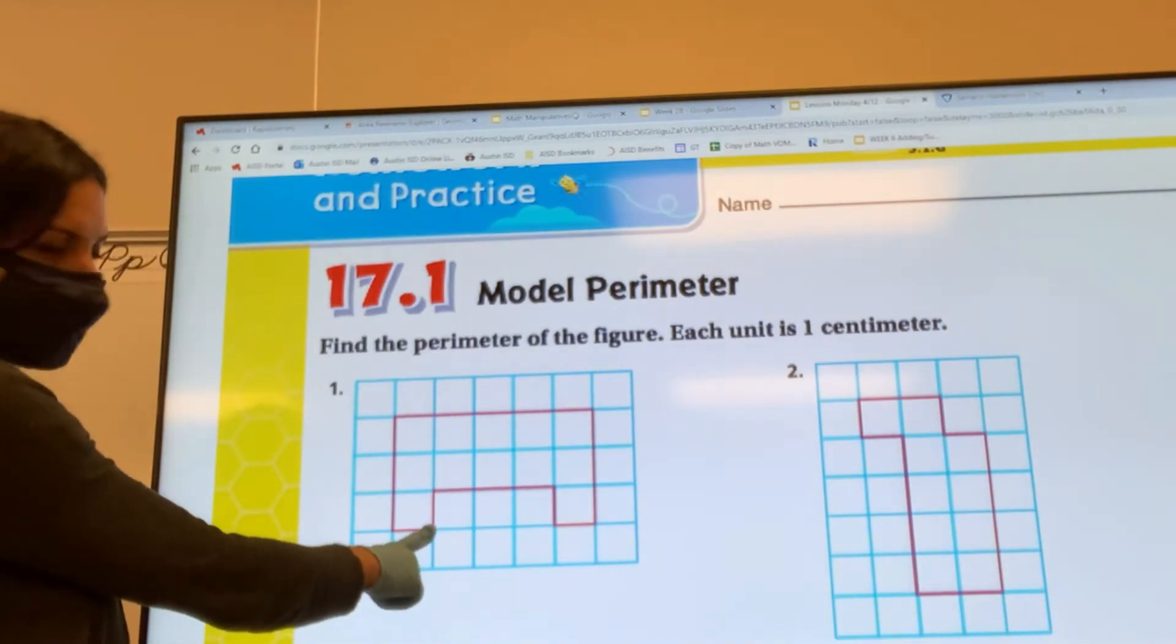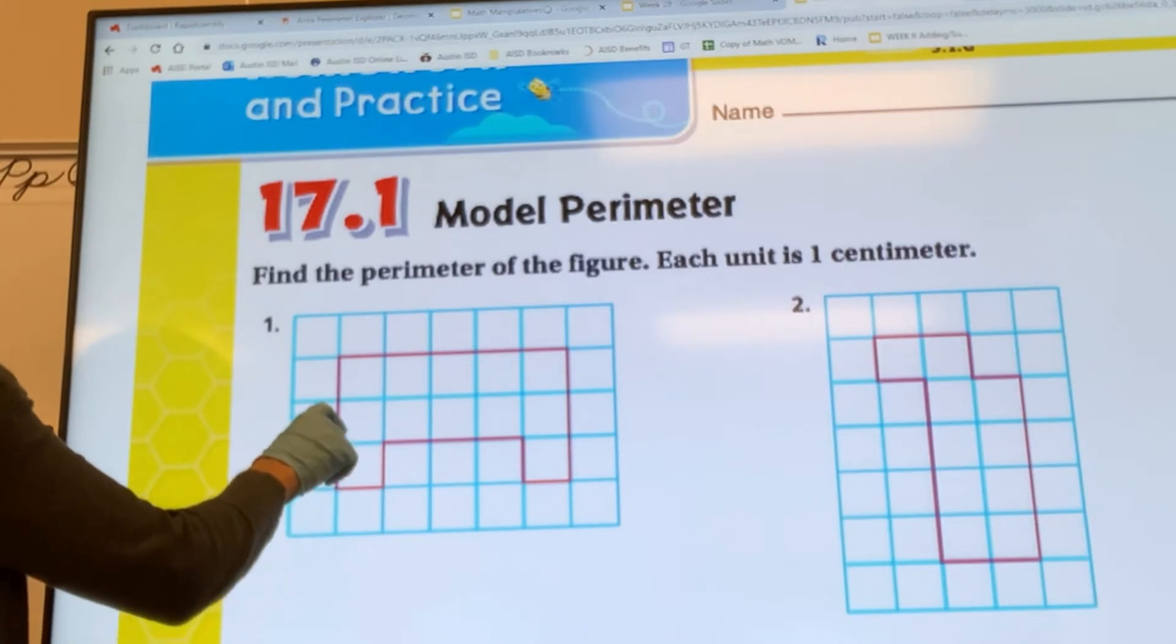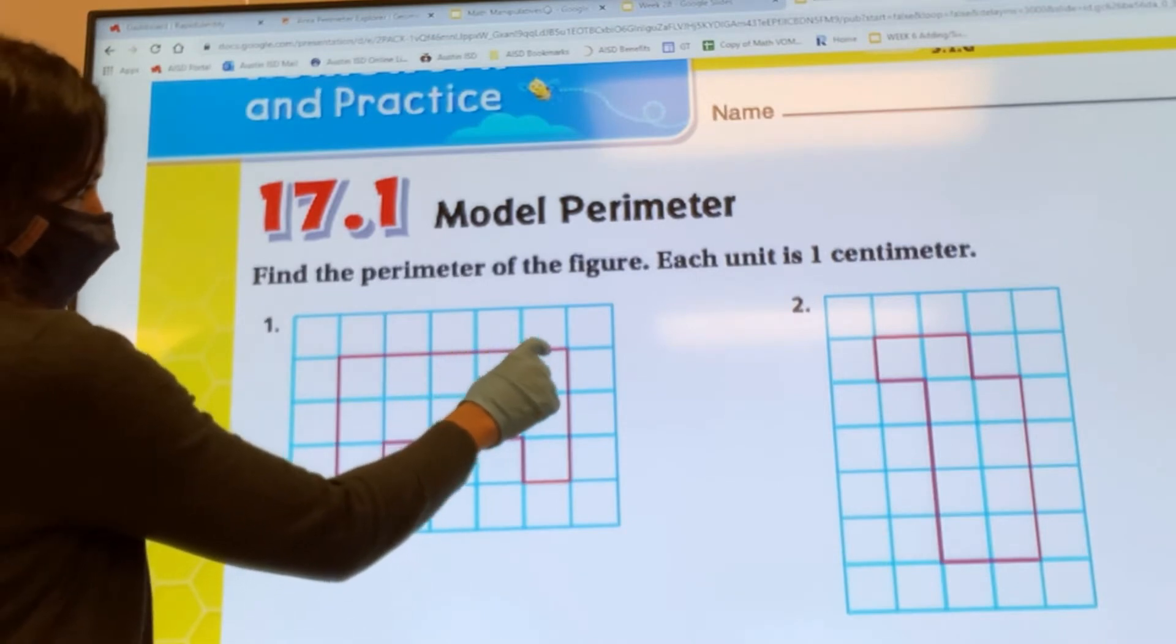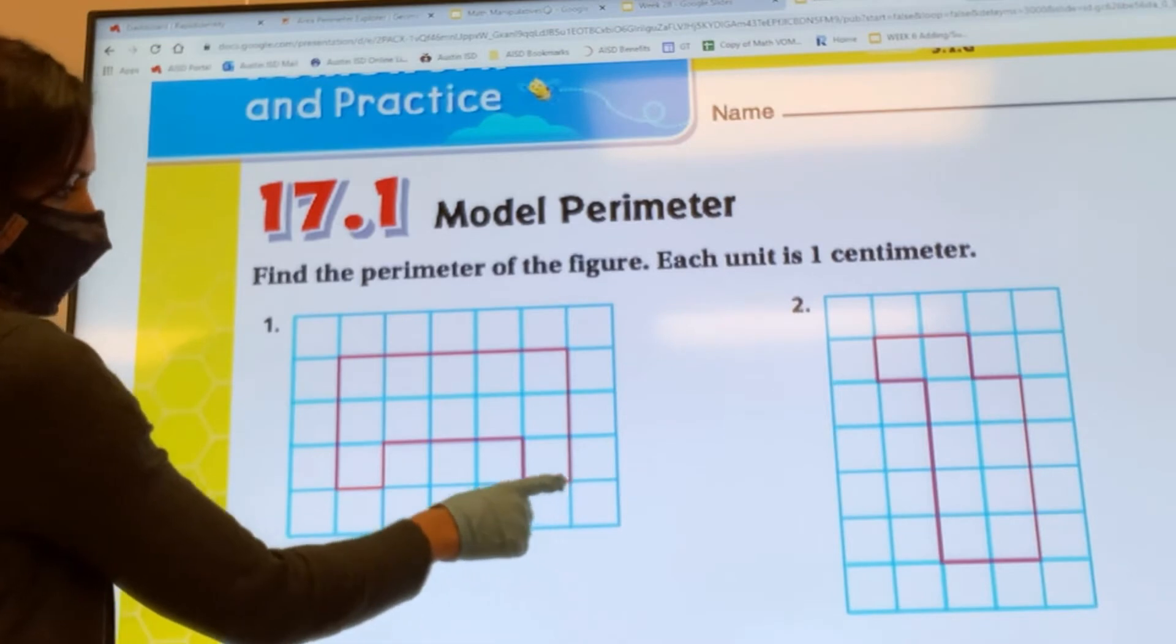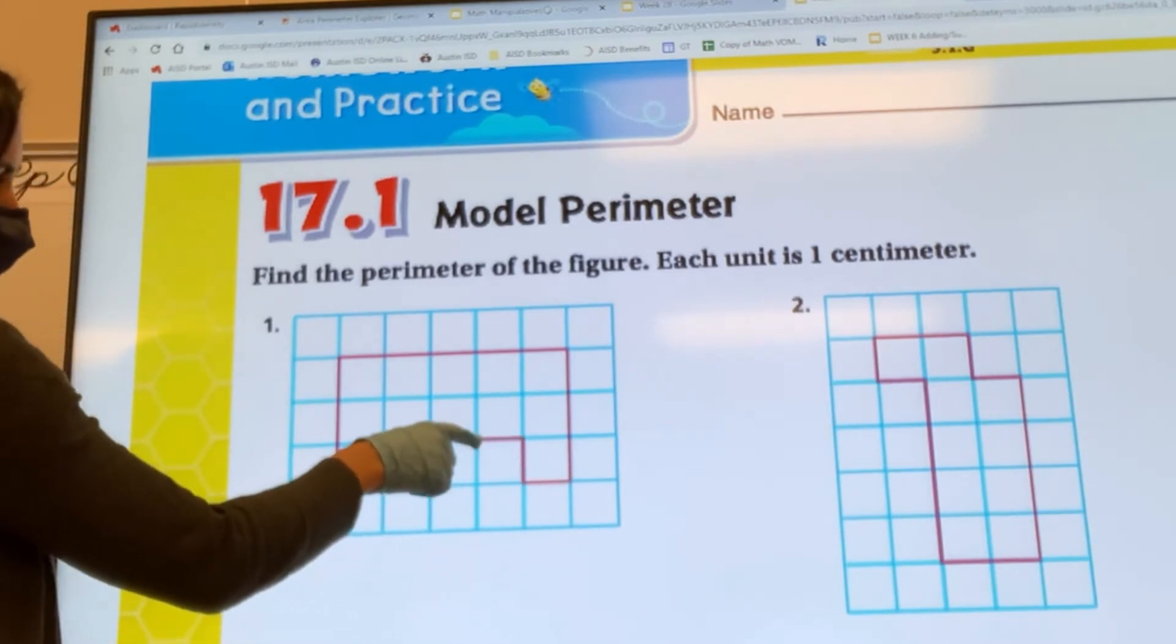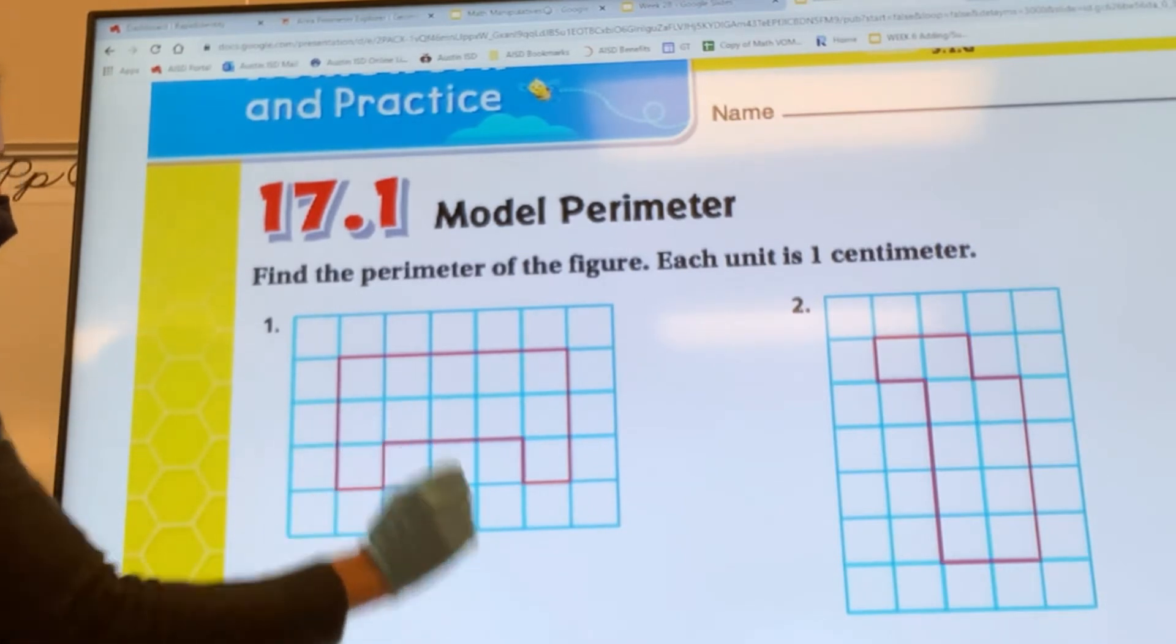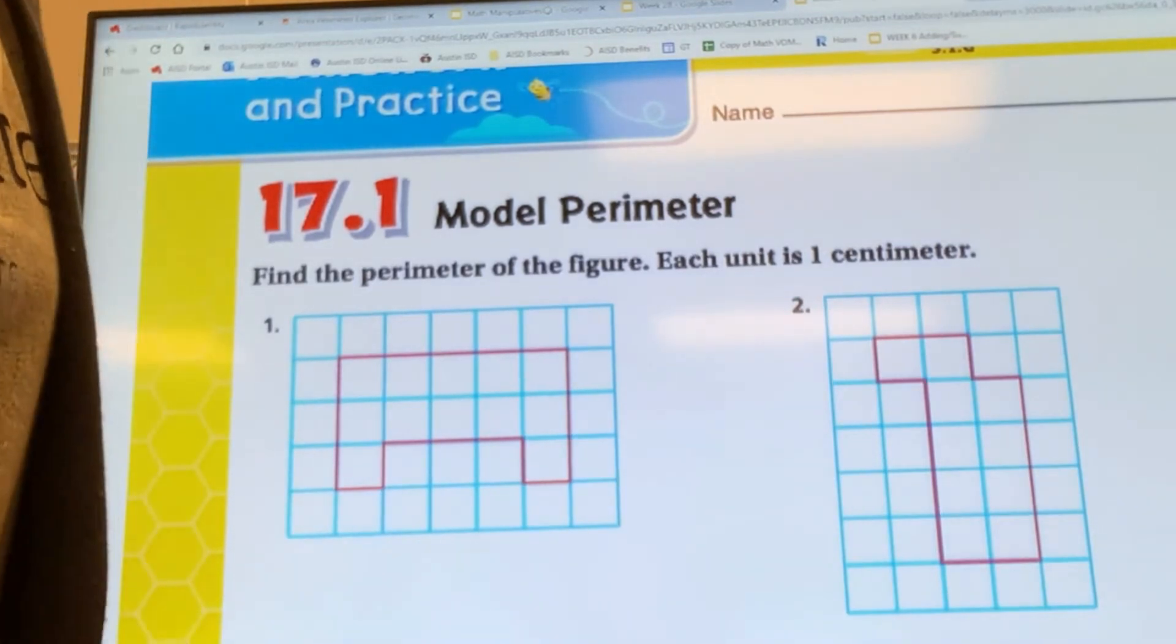Let's point it over there and let's begin. 1, 2, 3, 4, 5, 6, 7, 8, 9, 10, 11, 12, 13, 14, 15, 16, 17, 18. So our answer is 18 centimeters.